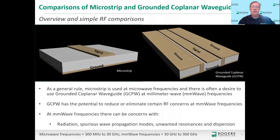Here I have visually shown a MicroStrip transmission line on the left and a Grounded Coplanar Waveguide on the right. It's also called a Conductor-Backed Coplanar Waveguide. I'm just going to call it Grounded Coplanar Waveguide or GCPW. As general comments, MicroStrip transmission lines are usually used at lower frequencies like microwave frequencies, and as applications progress into the higher frequency millimeter wave range, that's when Grounded Coplanar Waveguide is often considered. In theory, GCPW has a lot of potential to reduce issues at millimeter wave frequencies.